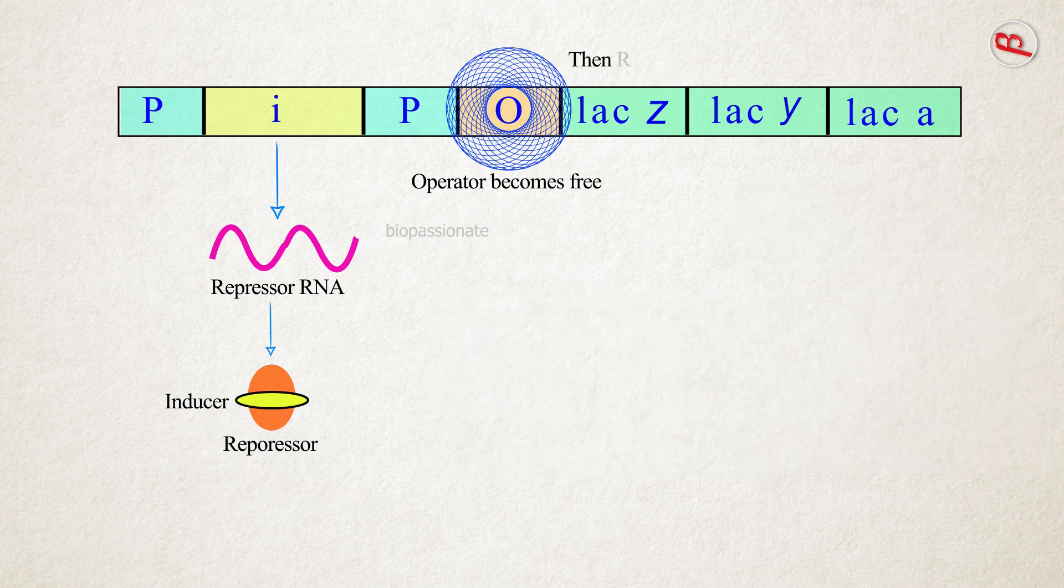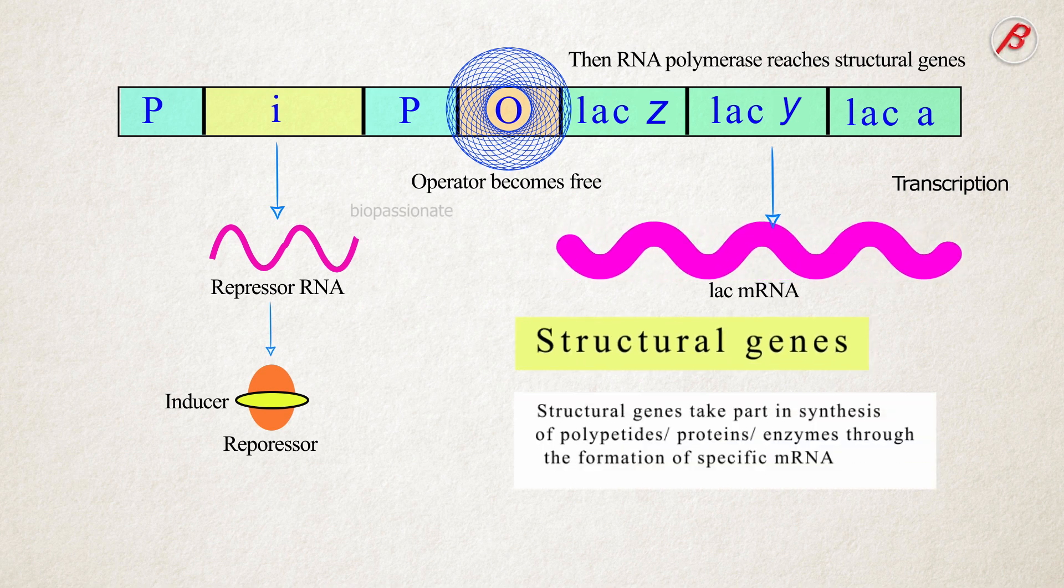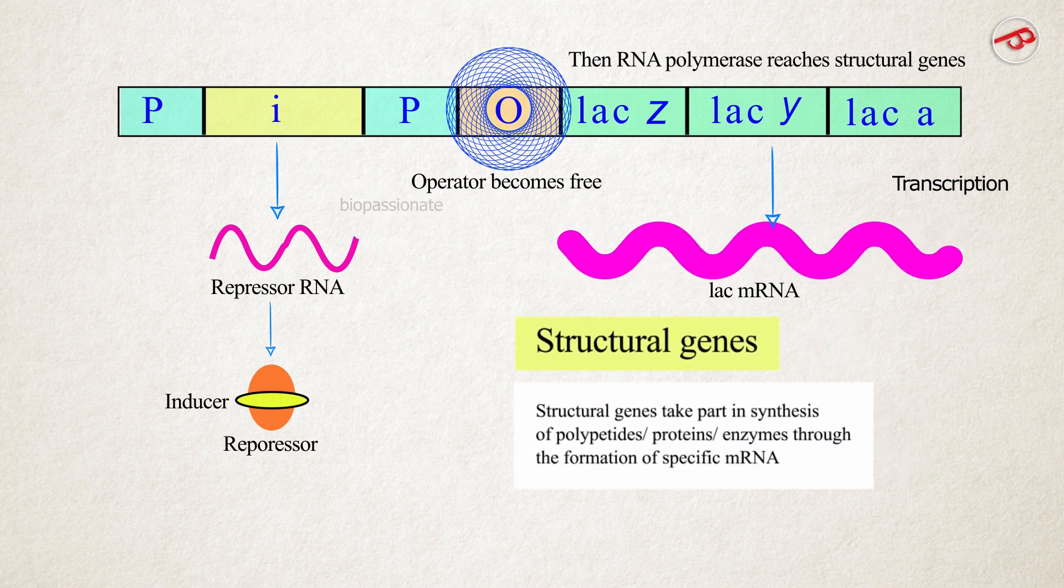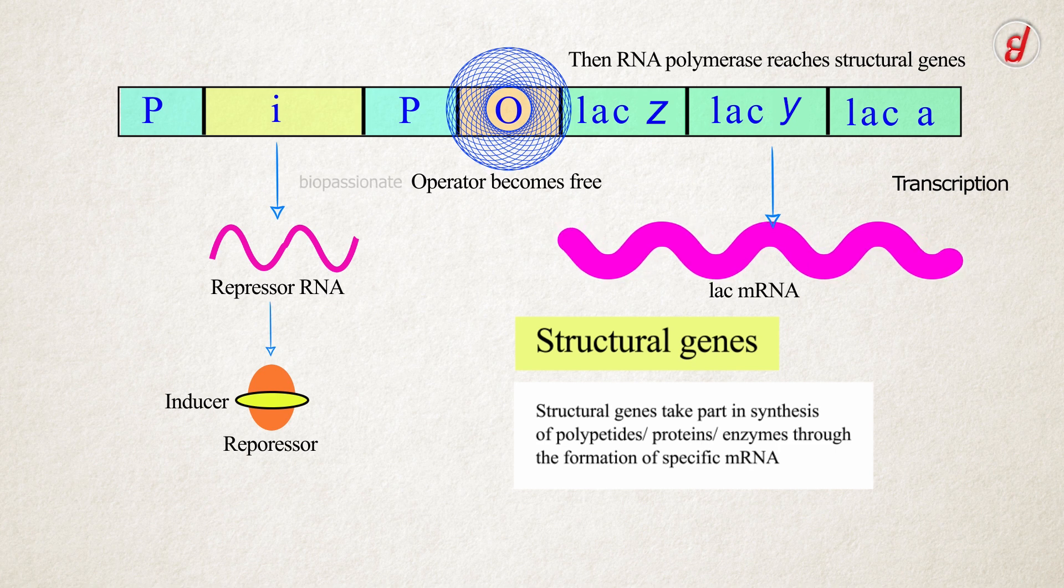Then RNA polymerase passes over the operator gene and reaches the area of structural genes. Then operon is switched on. Structural genes take part in synthesis of polypeptides, proteins, and enzymes through the formation of specific mRNA.